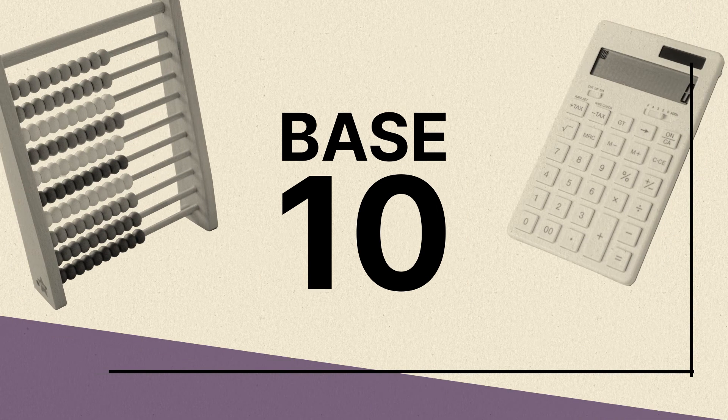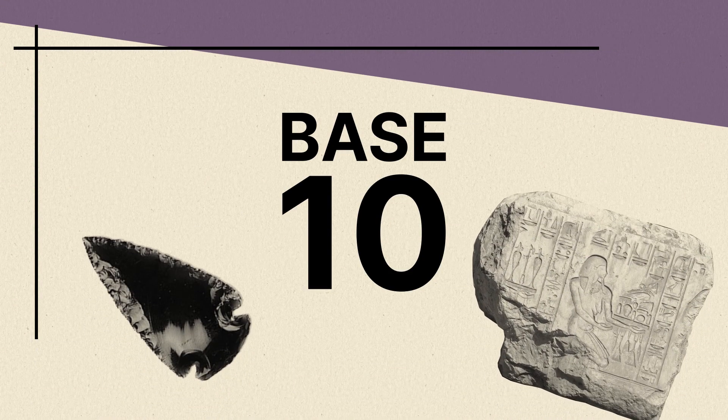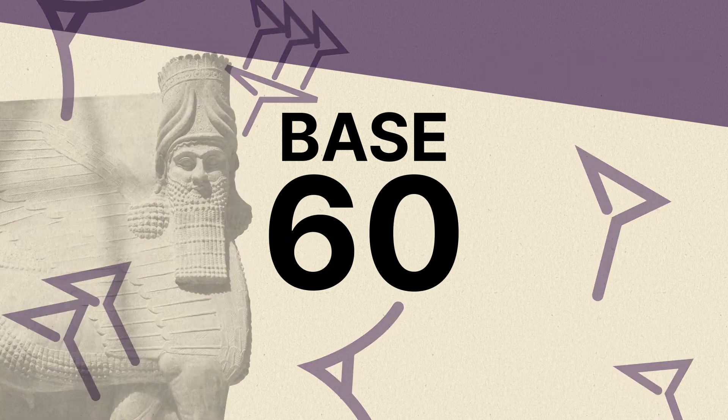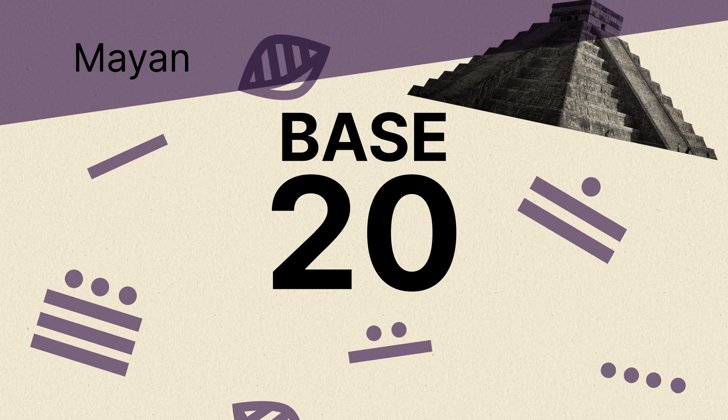But while base 10 has become the norm in today's society, that wasn't necessarily true in the ancient world. The Babylonians used a base 60 system and the Mayan people used a base 20 system where each place value had 20 possible options.